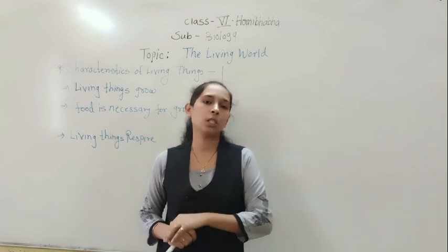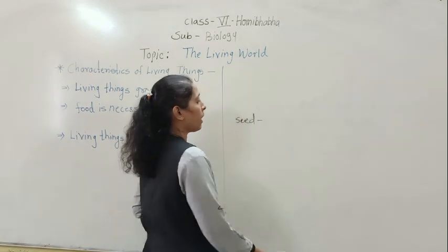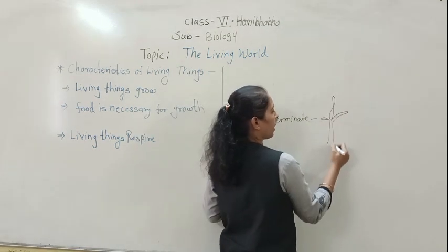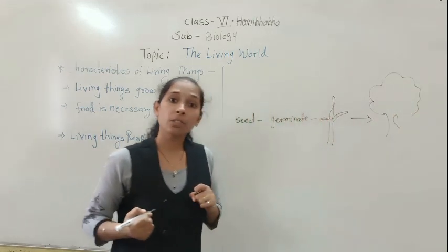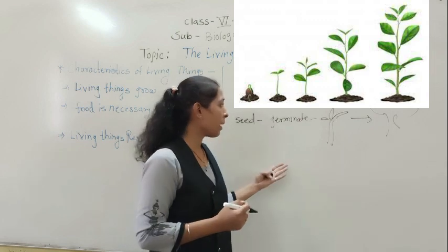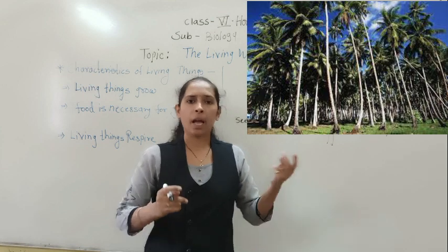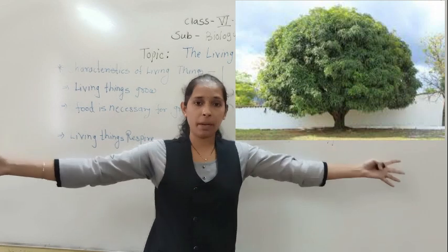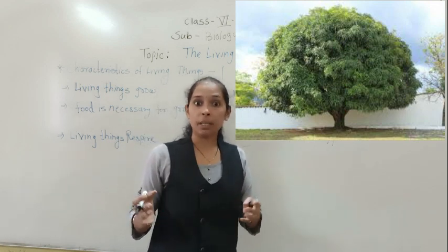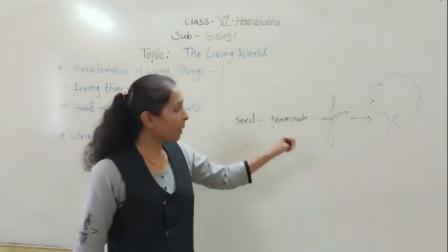Plants are also living things, so they also show growth. If you sow a seed into the soil, the seed starts to germinate, then slowly forms a small plant, and that small plant grows into a big tree. Some plants show growth in a vertical manner — for example, coconut and bamboo. Some plants show growth in a horizontal manner, becoming very wide, like banyan and peepal trees. So growth means increasing in height and width.